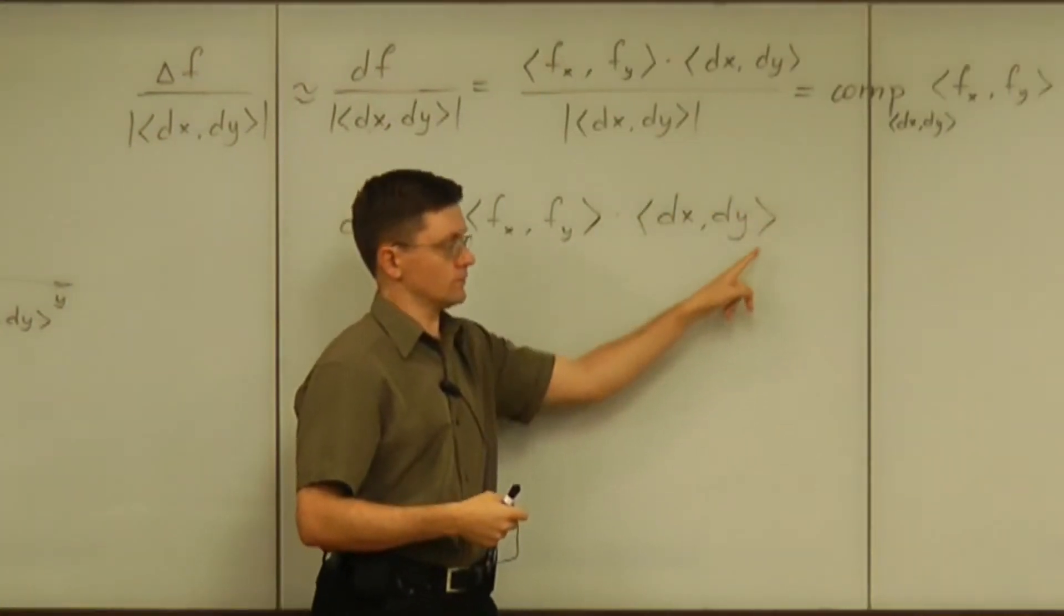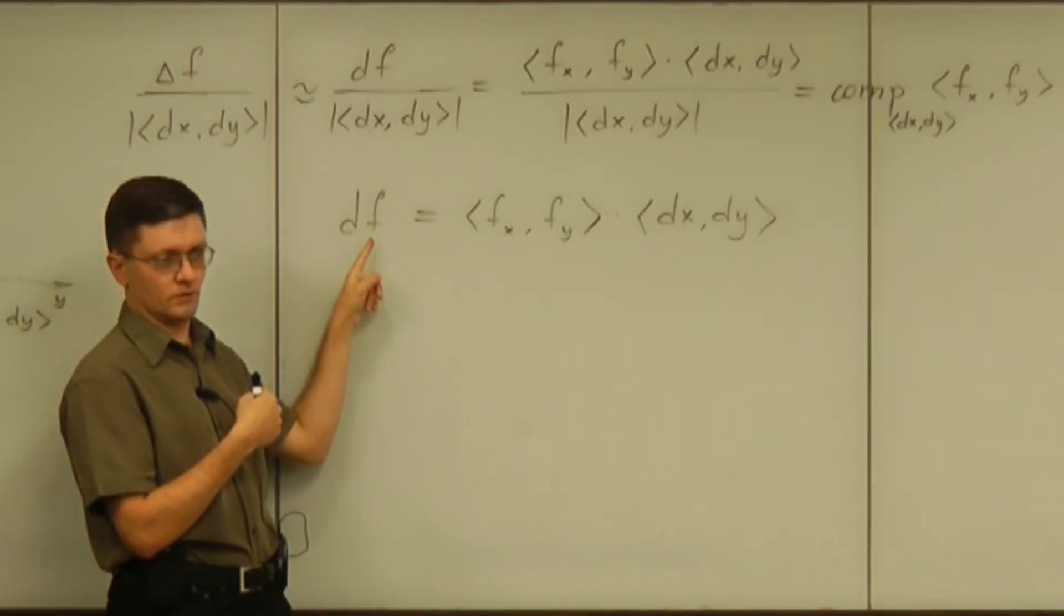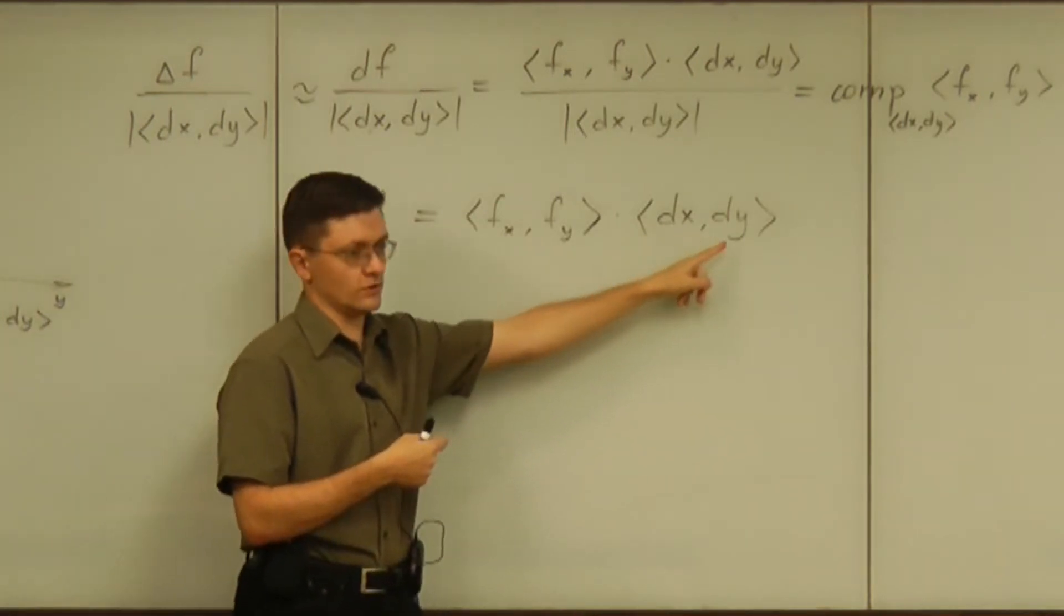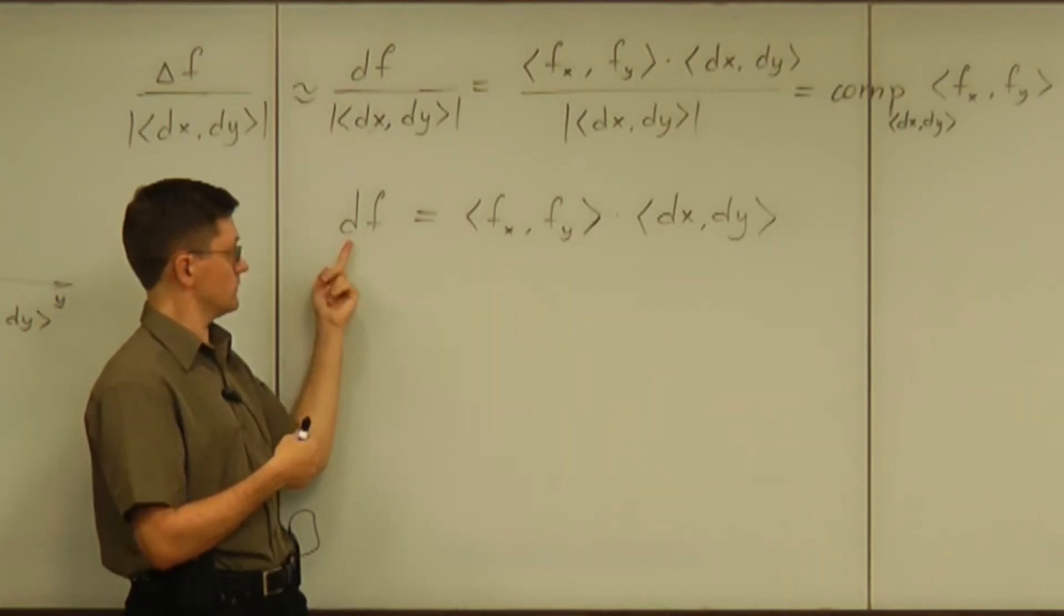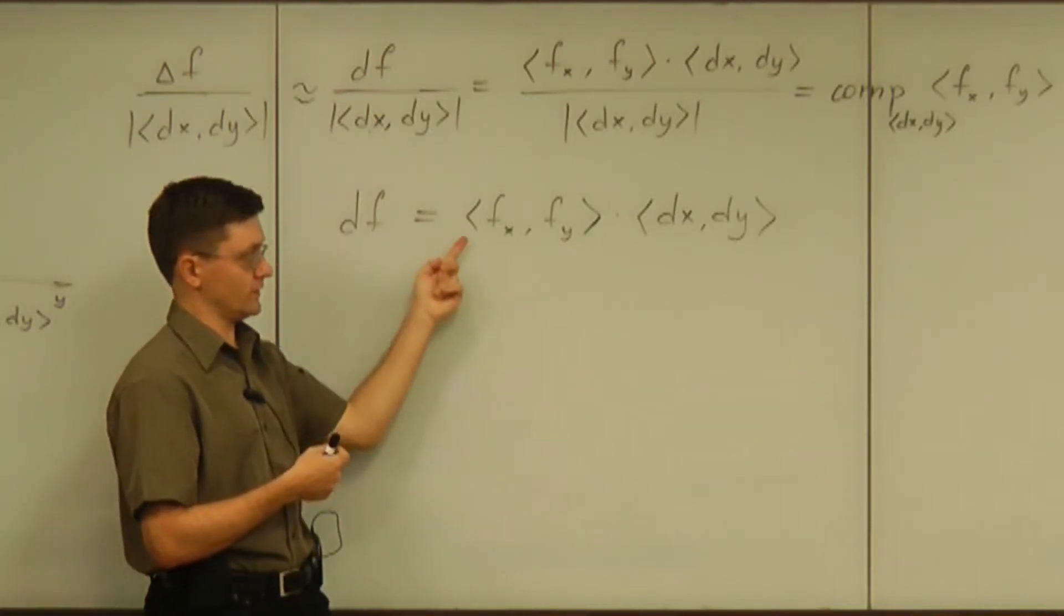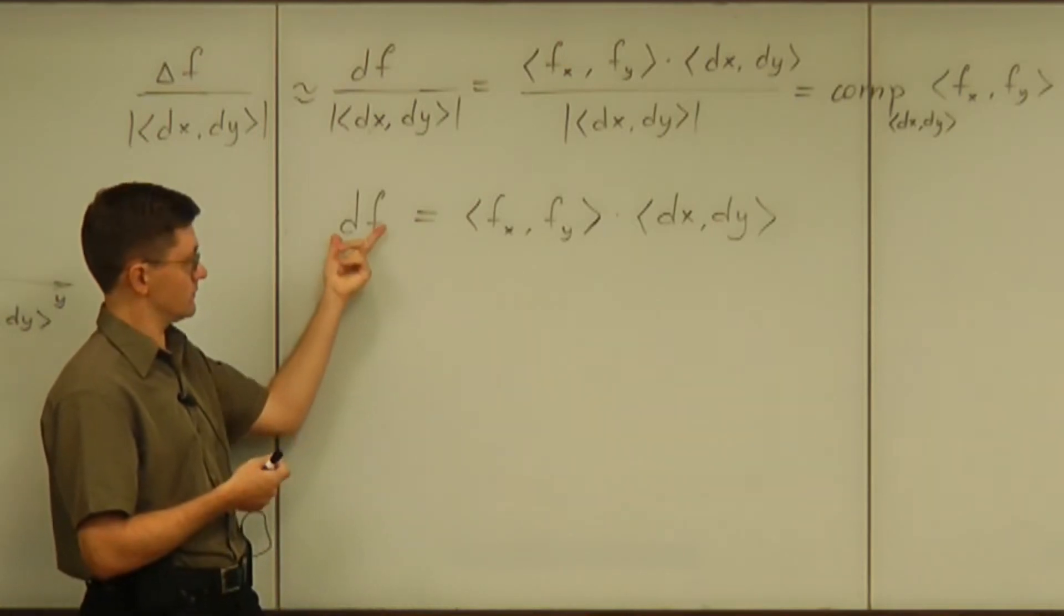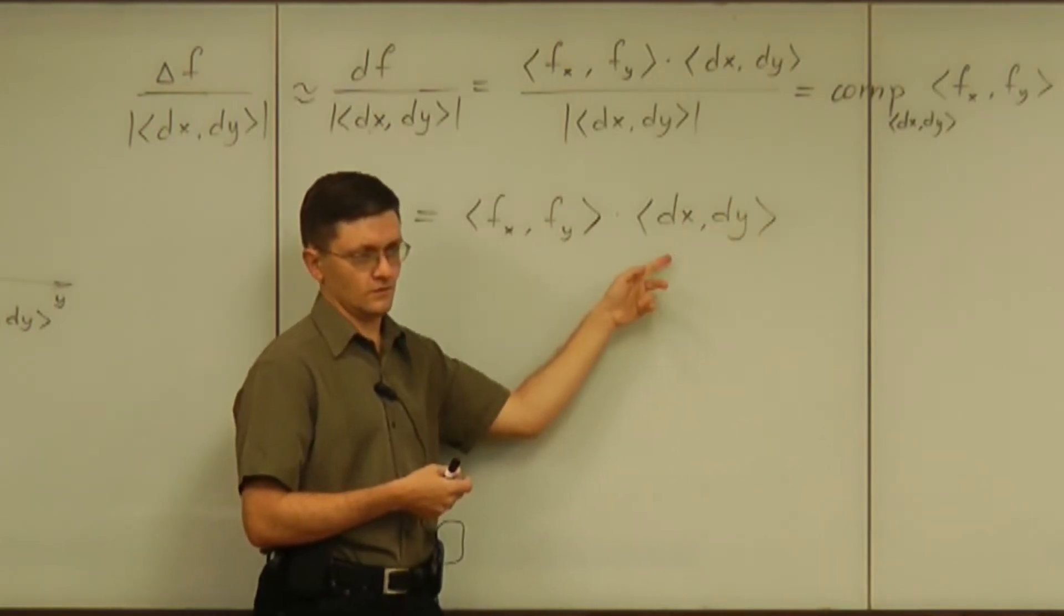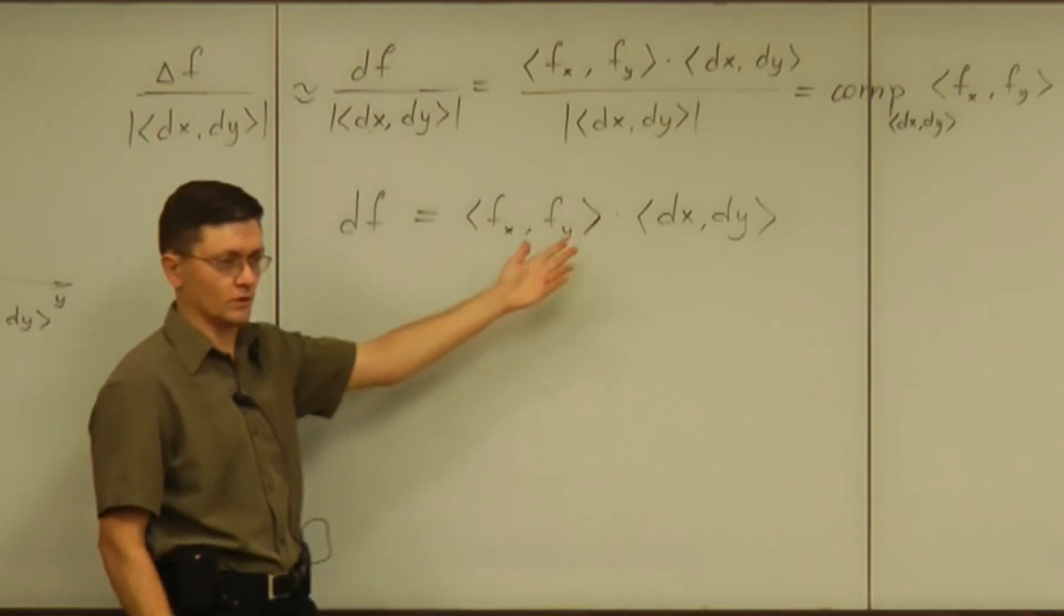So you look at the change of the input for the function and relate it to the change of the output in a very precise linear way. We said that the change of the input multiplied by something is the change of the output. And having that, don't you want to call that the derivative? Saying that df is equal to derivative times d input. The input now is a vector but there is nothing we can do about it.